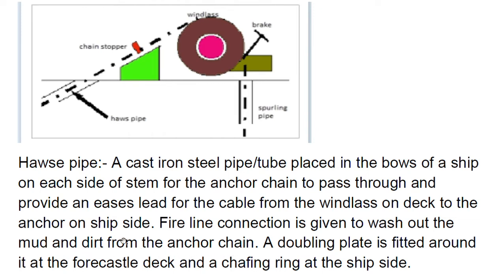A fire line connection is provided to wash out mud and dirt from the anchor chain, so there is a washout connection. A doubling plate is fitted around the forecastle deck and a chaffing ring at the ship's side. So from the windlass, the chain cable passes through this hawse pipe and then goes to the anchor.